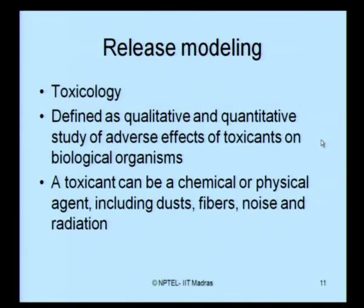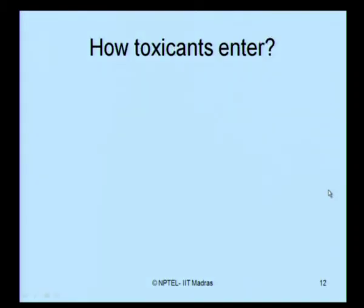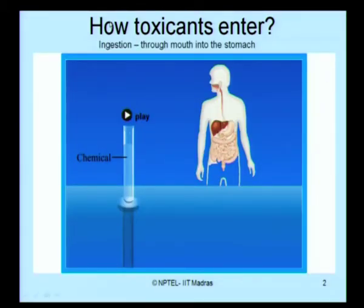A toxicant can be a chemical or a physical agent — not necessarily only chemical. It can be a physical agent like dust, fibers, noise, or radiation. All are called toxicants, and all should be defined qualitatively and quantitatively for their adverse effects on biological organisms like human beings. The fundamental question is: how do these toxicants enter the human body?